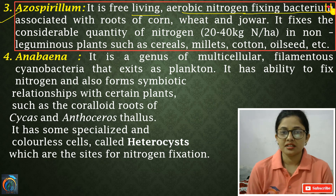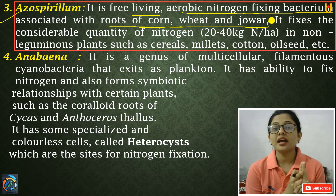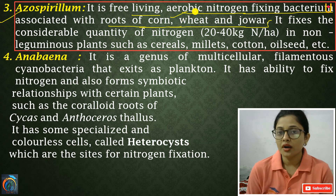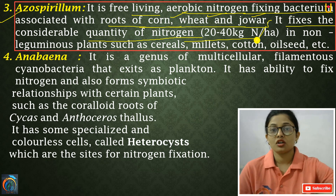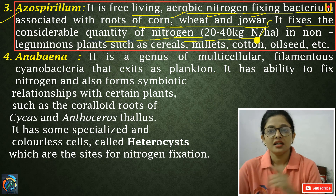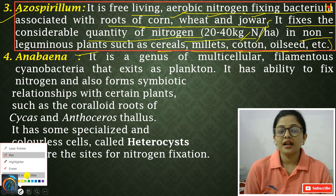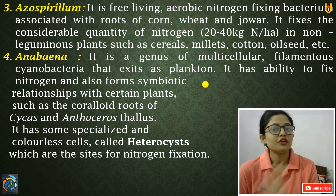Azospirillum is a free-living aerobic nitrogen-fixing bacteria associated with the roots of corn, wheat, and jowar. Being aerobic means it requires oxygen presence. It fixes a considerable quantity of nitrogen — that is 20 to 40 kg nitrogen per hectare. For non-leguminous plants like cereals, cotton, and oilseeds, Azotobacter and Azospirillum are responsible nitrogen-fixers, while Rhizobium is responsible for leguminous plants.